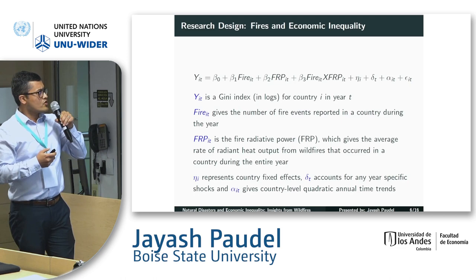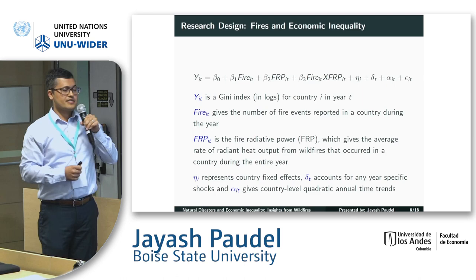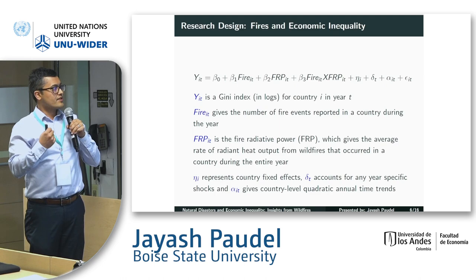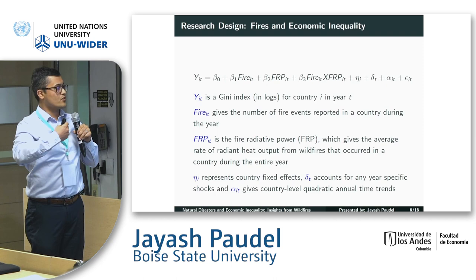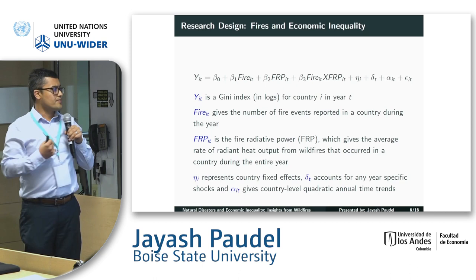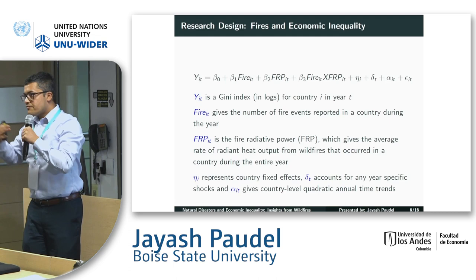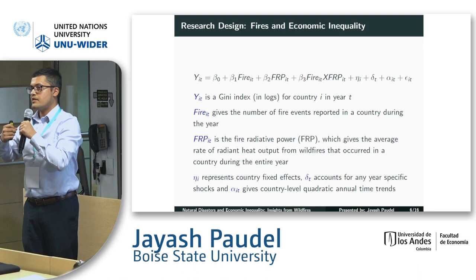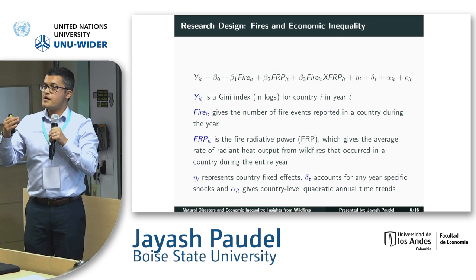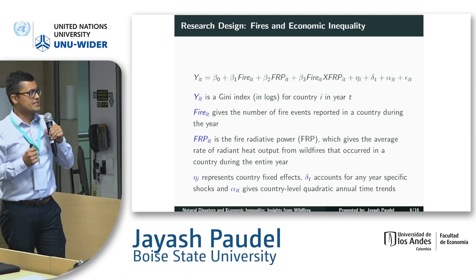In terms of the research design, it's a simple specification where I'm modeling economic inequality as a function of two indicators of fire events: the number of fire events reported in a given country during the given year, and FRP — fire radiative power — capturing the average rate of radiant heat produced by fires over the year. I augment the specification with country fixed effects, quadratic annual time trends, and year fixed effects. In different specifications I also look into other baseline country-level indicators interacted with year indicators, and the results are roughly similar in magnitude.